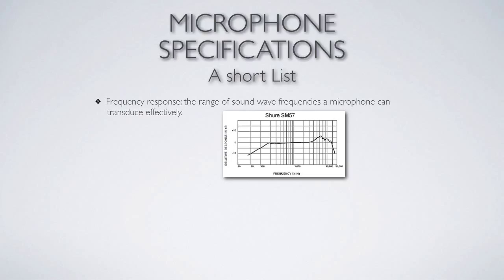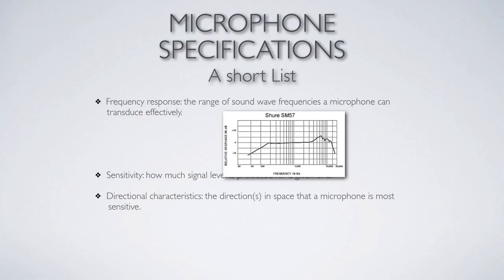Another aspect we should be aware of is the sensitivity of the mic — how much signal level is produced for a given SPL. If you have a certain amount of energy coming in, how much energy comes out? Generally, different design types have different sensitivities: the ribbon is the least sensitive, the moving coil is next, and the condenser is the most sensitive. Sensitivity will be related to another spec called signal-to-noise.